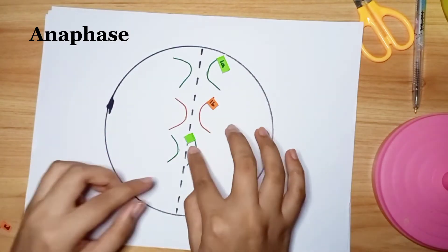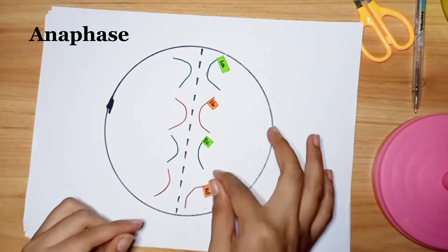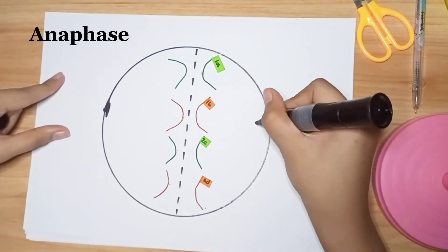Anaphase. In anaphase, the sister chromatids separate from each other and are pulled towards opposite ends of the cell.